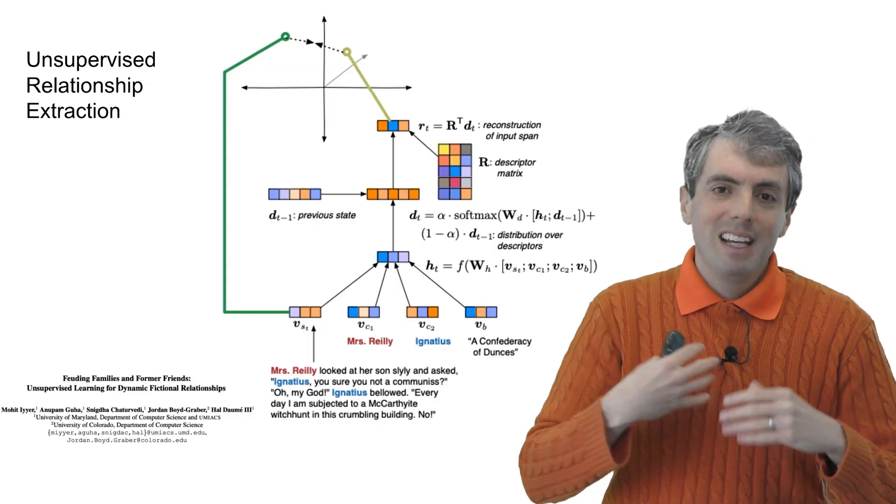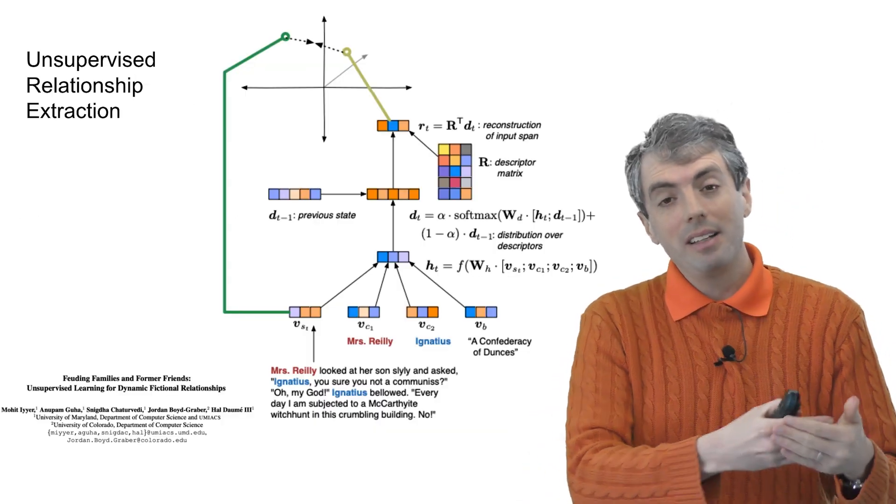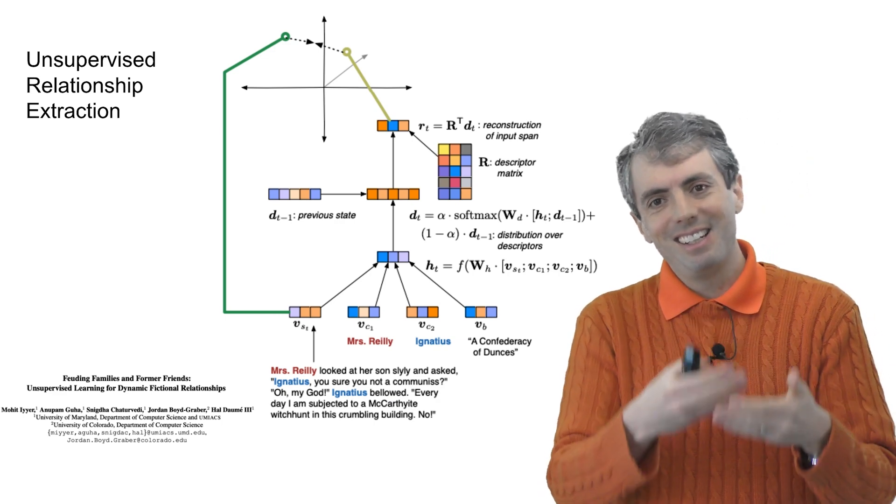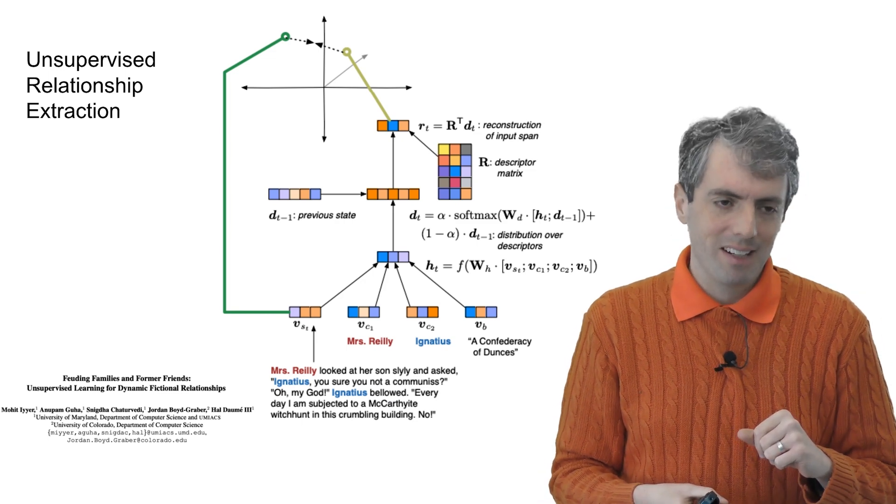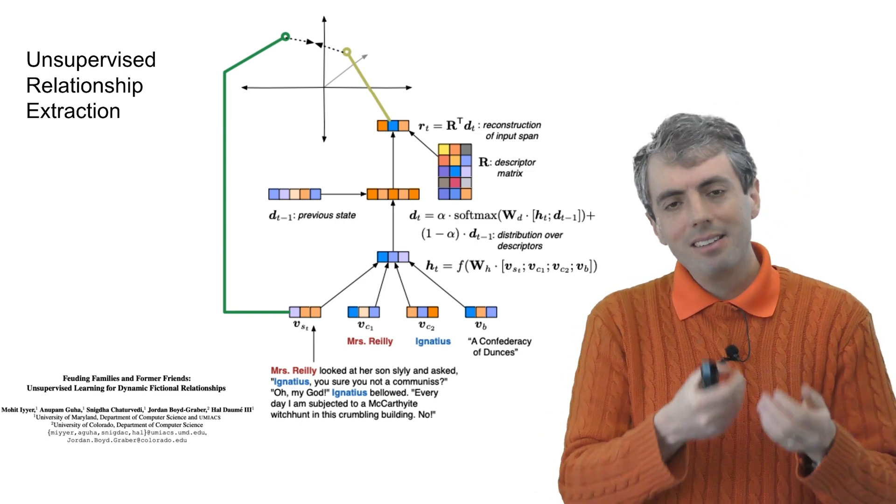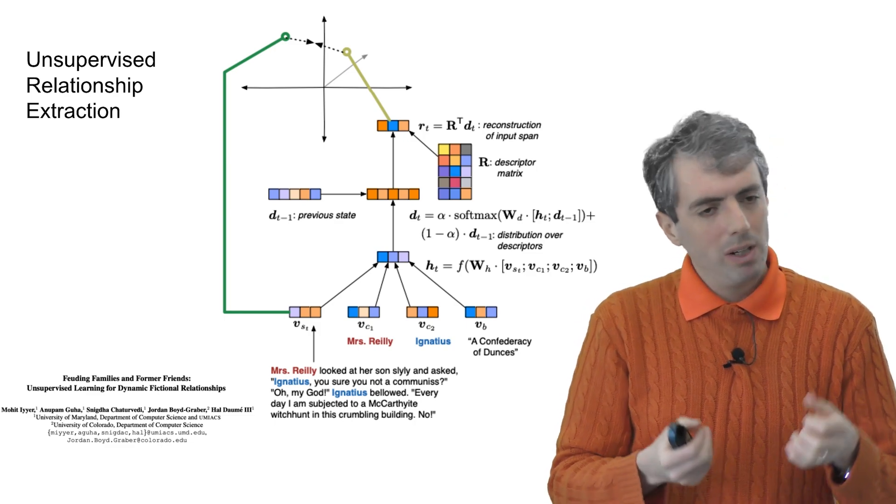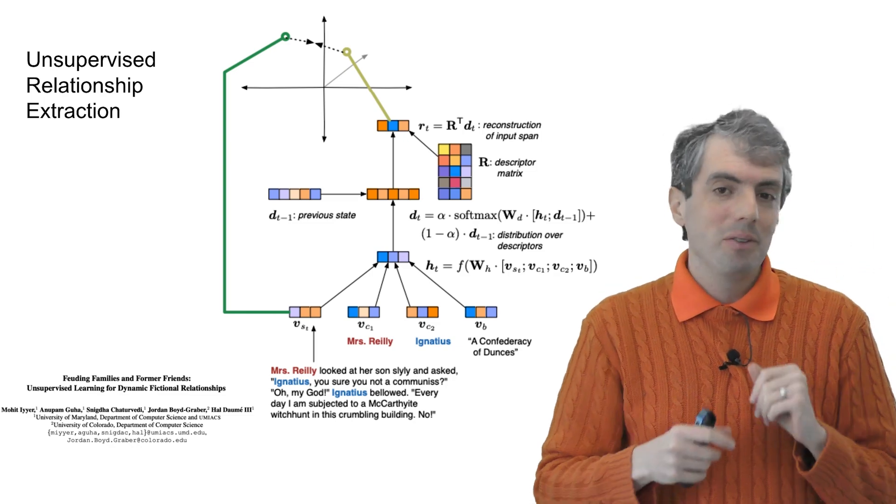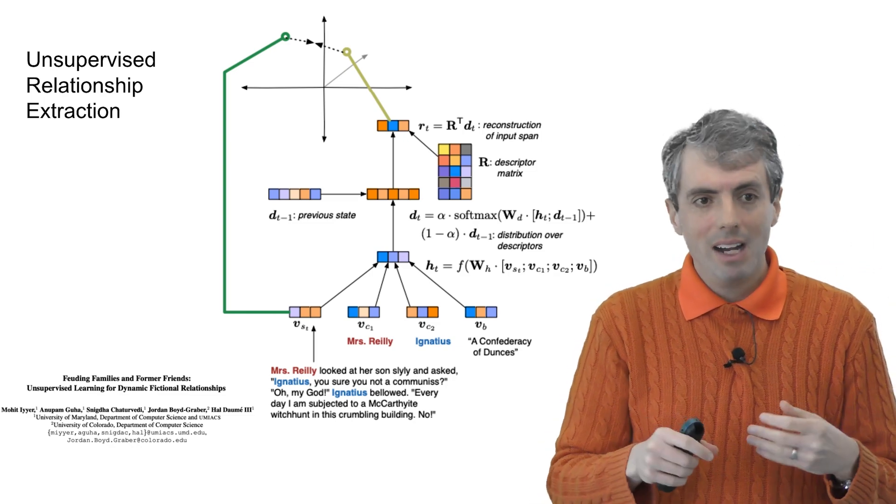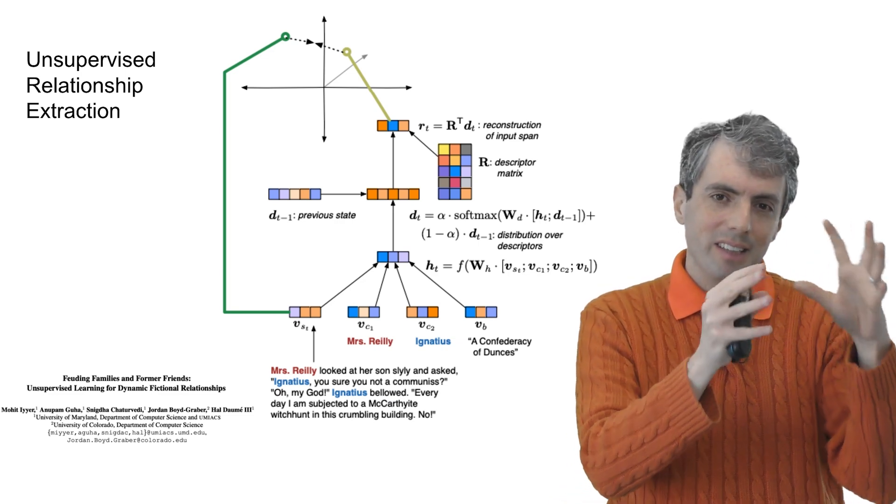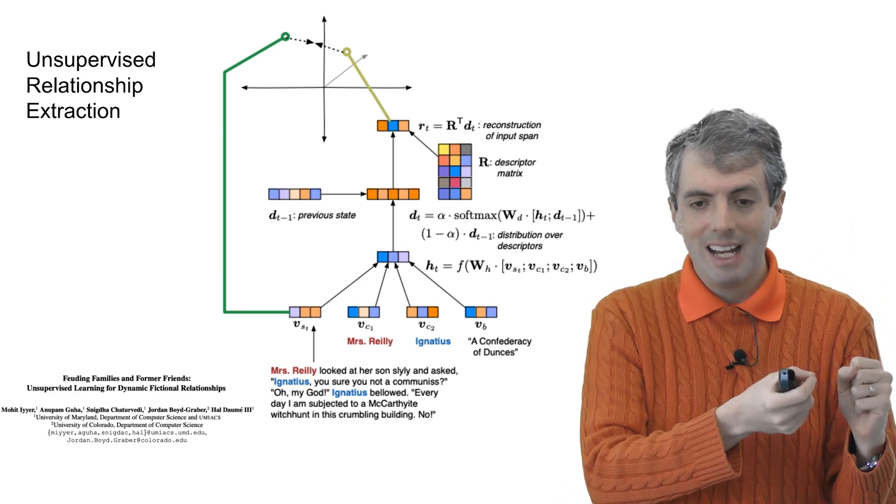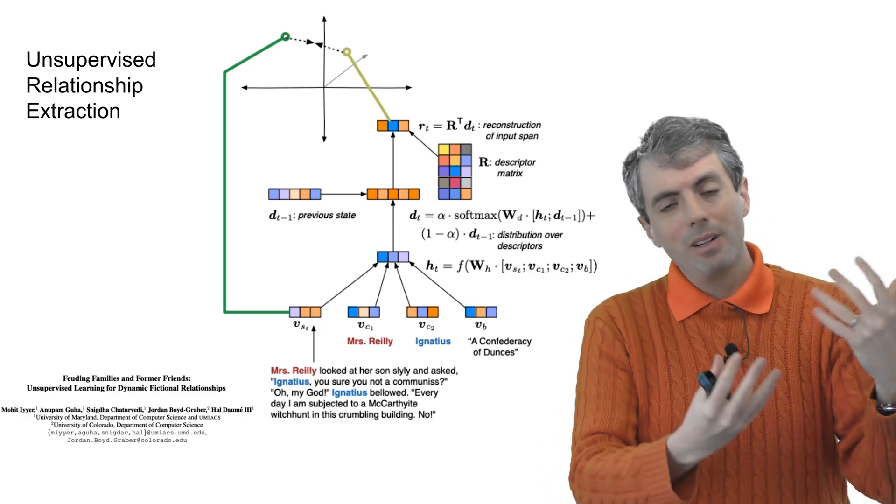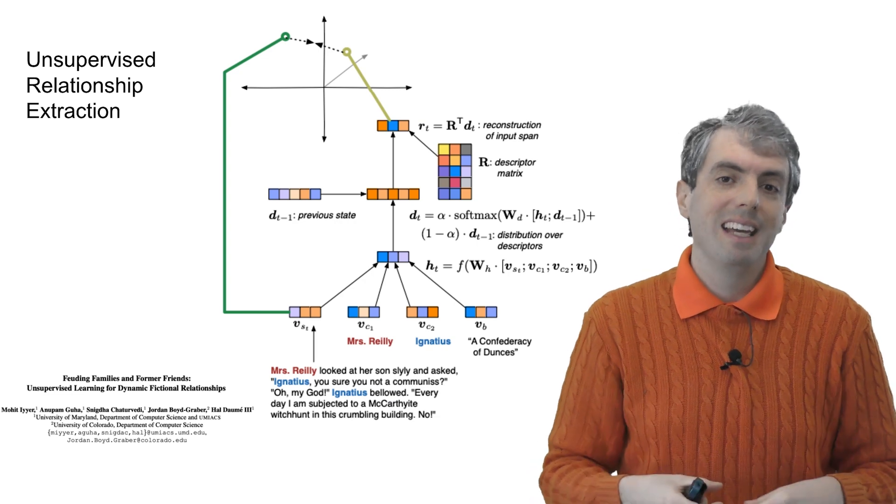My former student Mohit took a similarly unsupervised approach to learning the relationship between characters in novels. I mentioned this briefly in the co-reference section. And this looks a little bit like a neural topic model where you have two mentions of entities, you see all the words that appear around those two entities, and you can figure out that Romeo and Juliet are clustered together with similar words as Orpheus and Eurydice, and from that you can infer that there's this cluster that may refer to being in love.